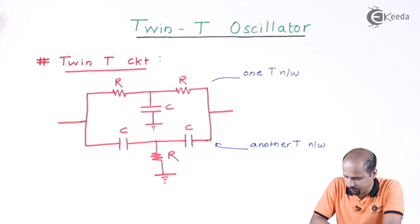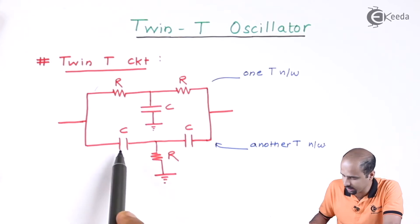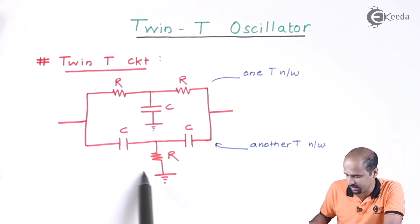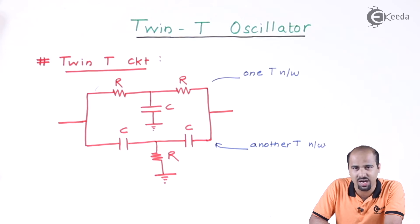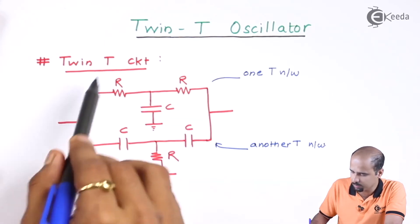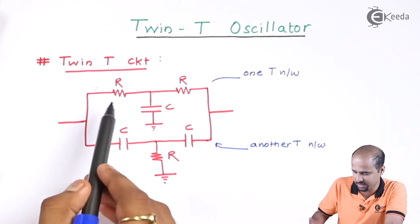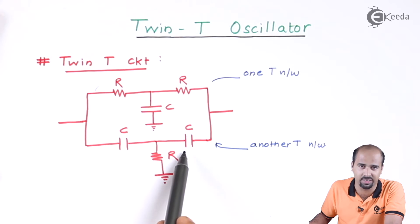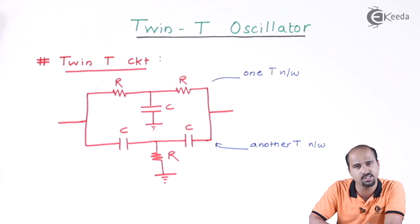If you observe carefully, in the first T network resistances are connected in series and capacitors are connected in series in the other. In the first T network I have a shunt capacitor, and in the other T network I have a resistance acting as a shunt component. Both are T networks but the components are exactly opposite to each other — that's why this is called a Twin T network.